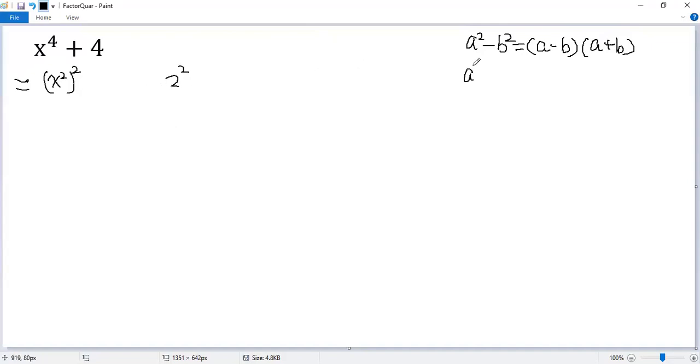Using the formula a squared plus 2ab plus b squared equals a plus b squared. To do that, we need to add a term 2ab, right?